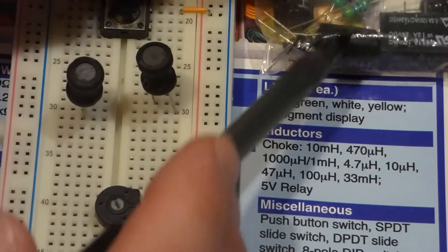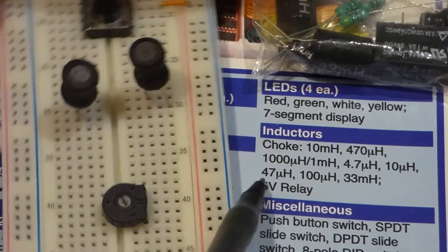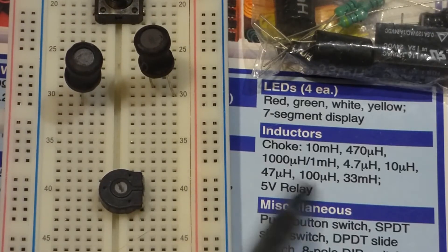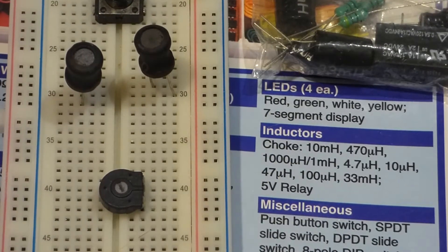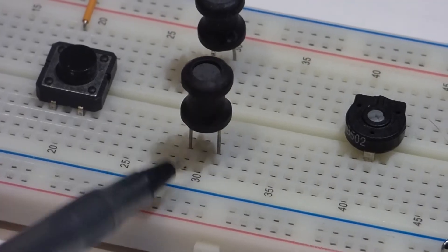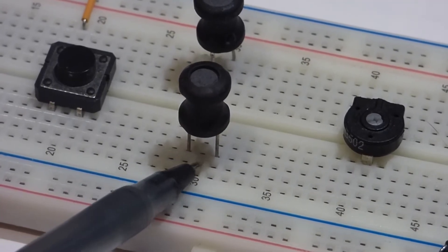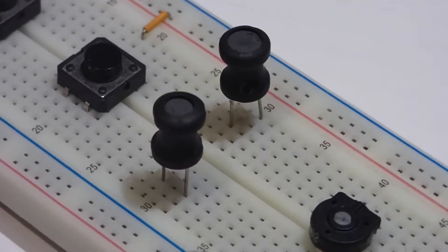I have these inductors from this kit. These are the different value inductors in that kit. These inductors, their leads are spaced enough where there's a row between them.